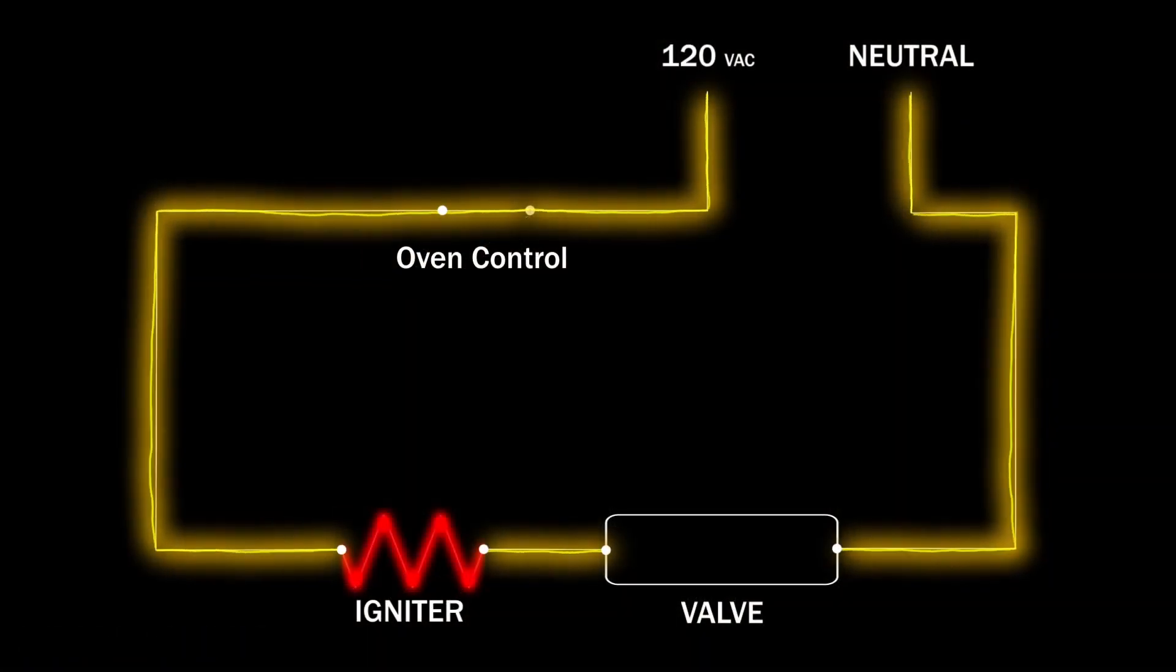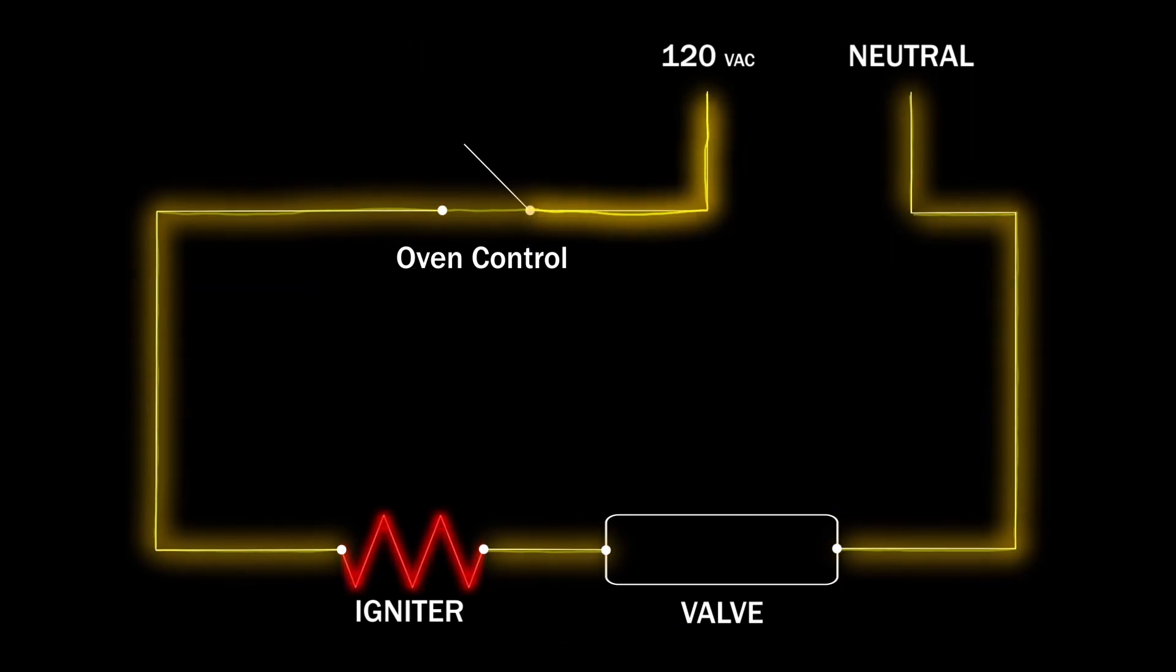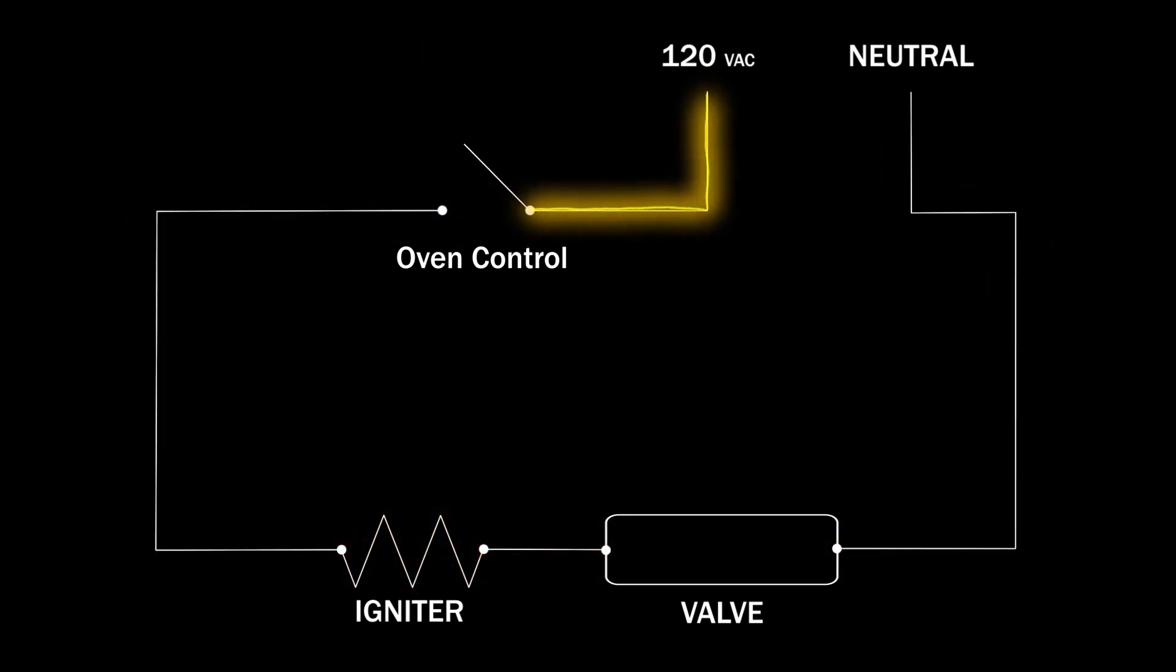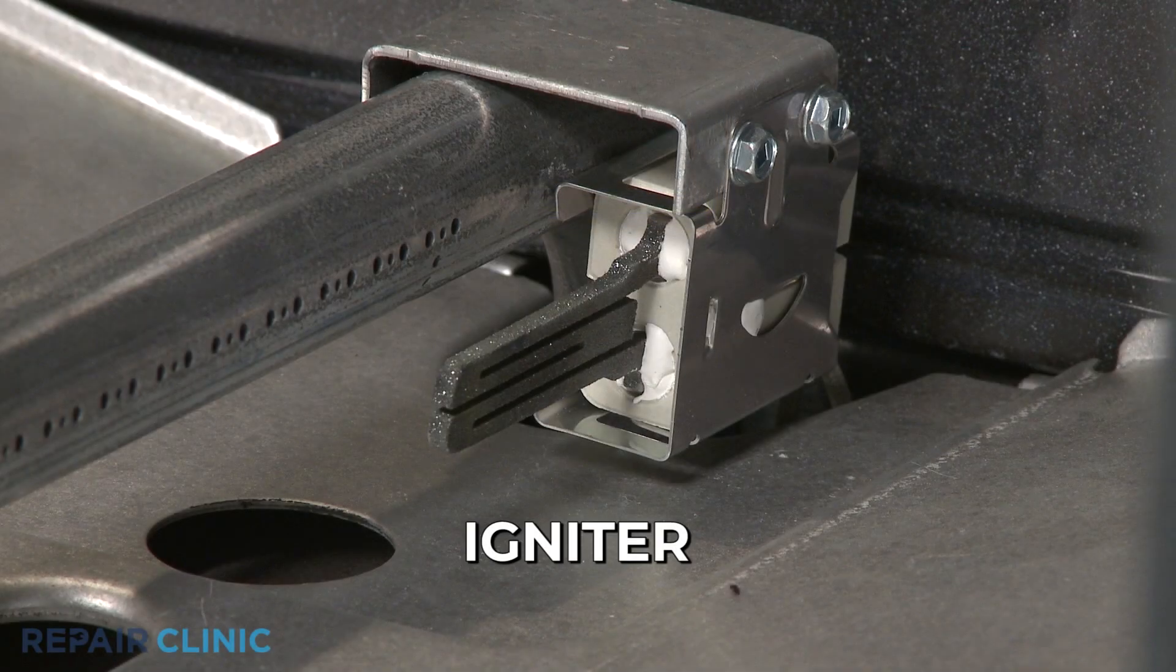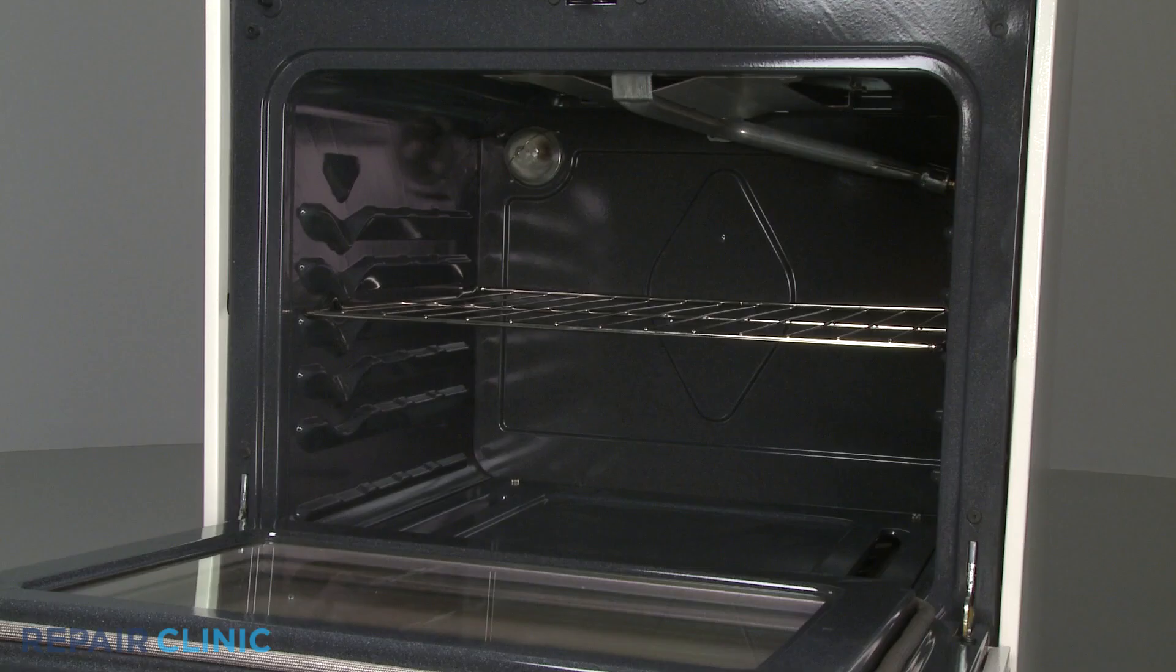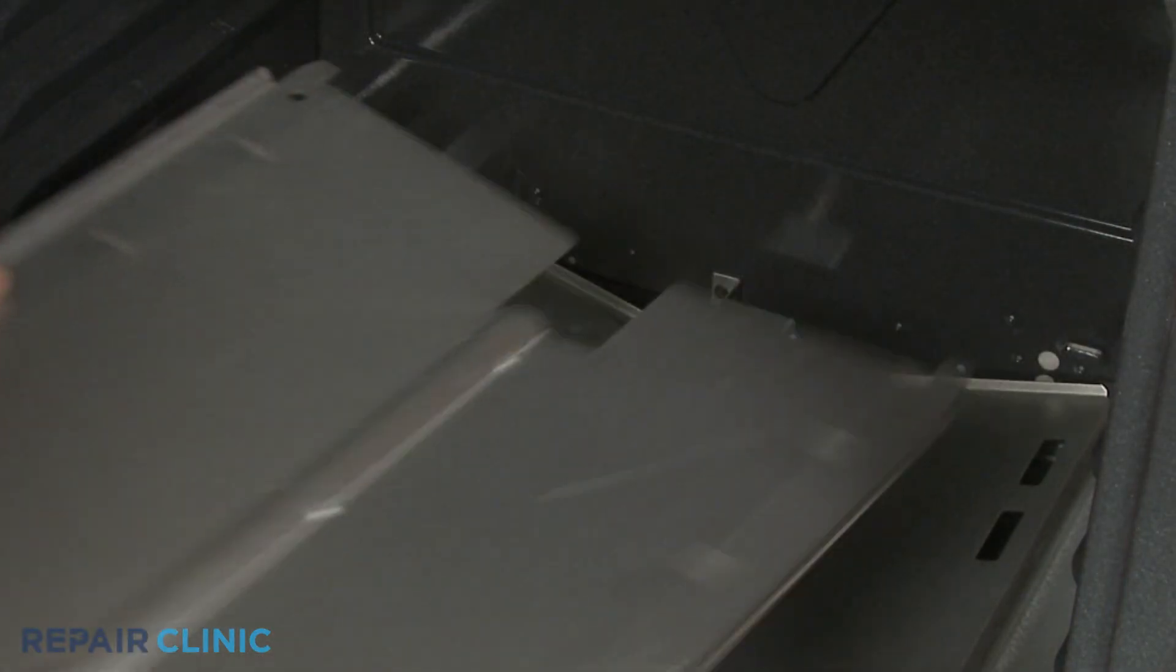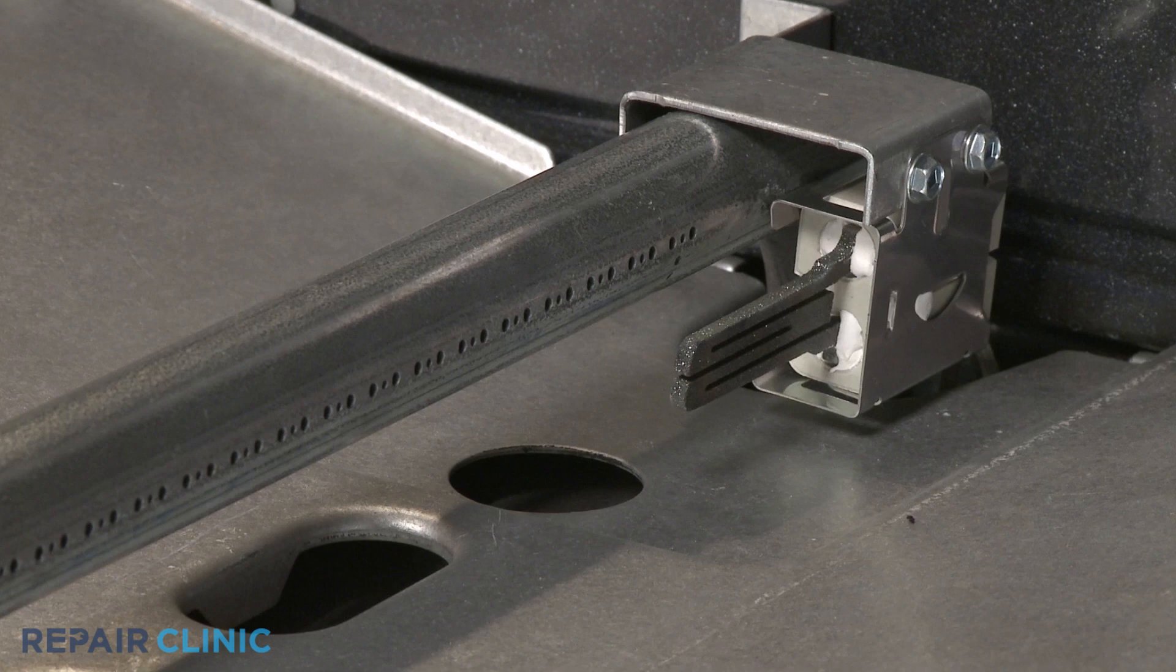If any of the ignition system components fail, the oven will either not heat at all or heat improperly. The component that most commonly fails is the igniter. If your oven's bake or broil burner is not working, remove any covers or shields and observe whether or not the burner's igniter is glowing.